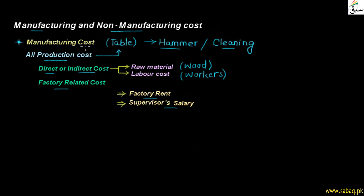So all costs from raw material to finished table are called Manufacturing Costs. Manufacturing cost is related to production or manufacturing.